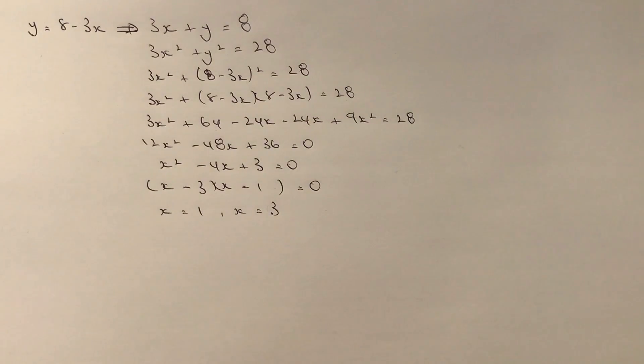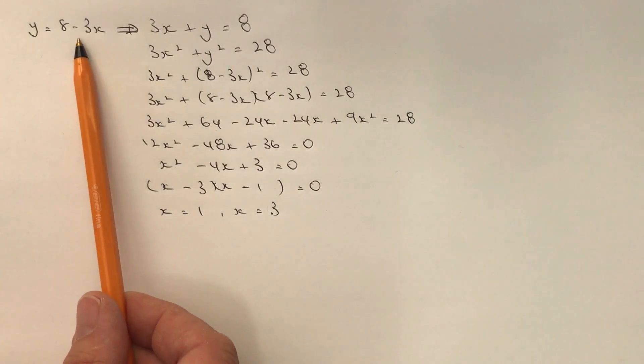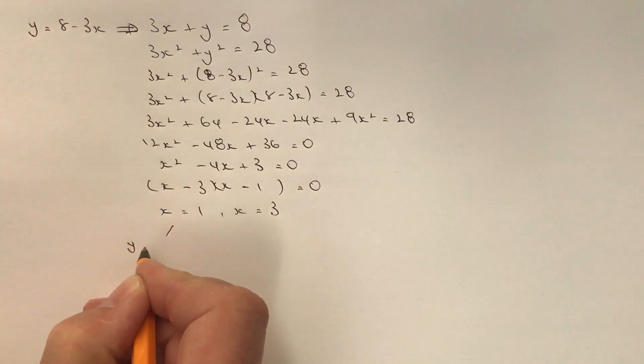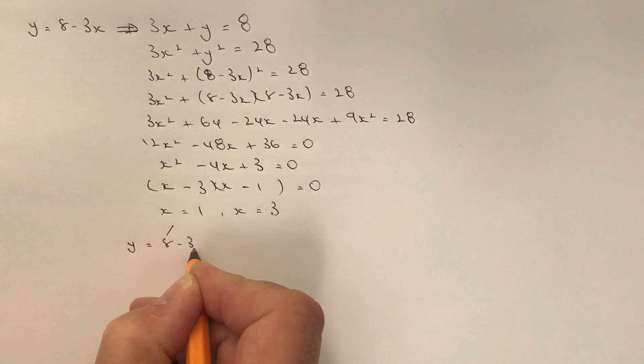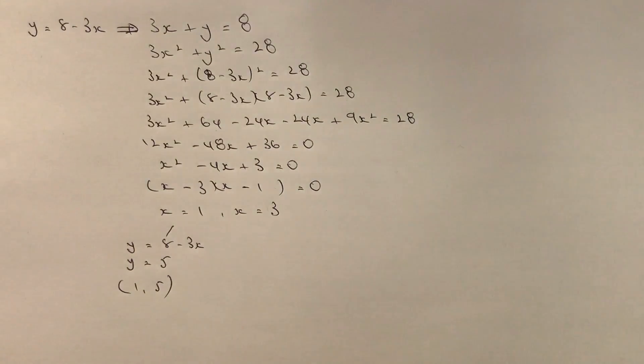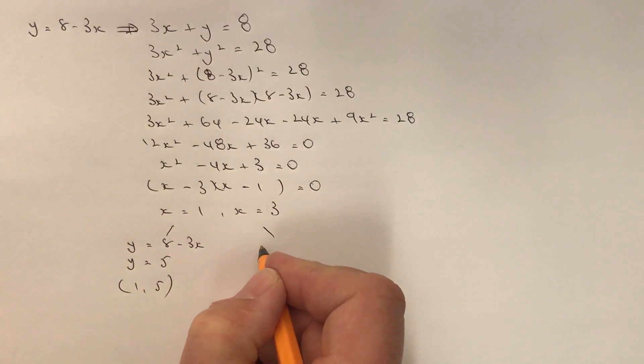And then really it's just a case of taking those two values of x and popping them back into probably the easiest equation, which is this one here. So when x equals 1, y is going to equal 8 minus 3x, so y is going to be equal to 5. So one of my coordinates where these two equations will cross each other on a graph is going to be (1, 5).